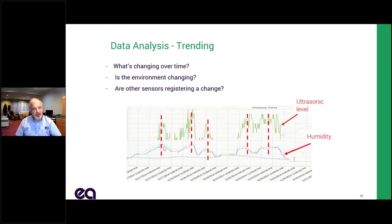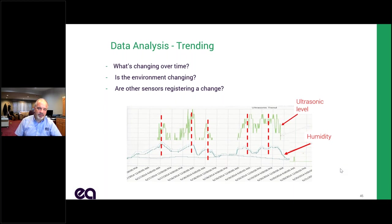Here's a correlation example where we're looking at the humidity level — the blue line — and the ultrasonic level — the green line. Clearly, when humidity goes up, the ultrasonic level goes up. There aren't many things in a substation that will change their ultrasonic level with humidity. Surface PD is one of them, so that gives us a real good indication that something real is going on.